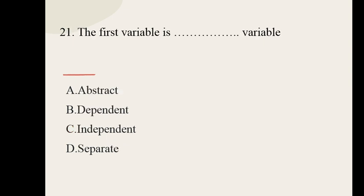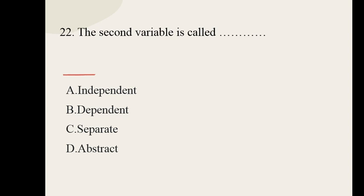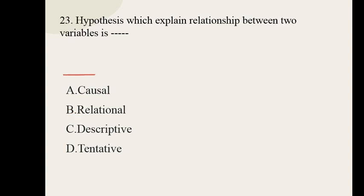Question number twenty-one. The first variable is dash variable. Options are: abstract, dependent, independent, separate. The correct option is independent variable. Question number twenty-two. The second variable is called: independent, dependent, separate, abstract. And the correct option is dependent variable.